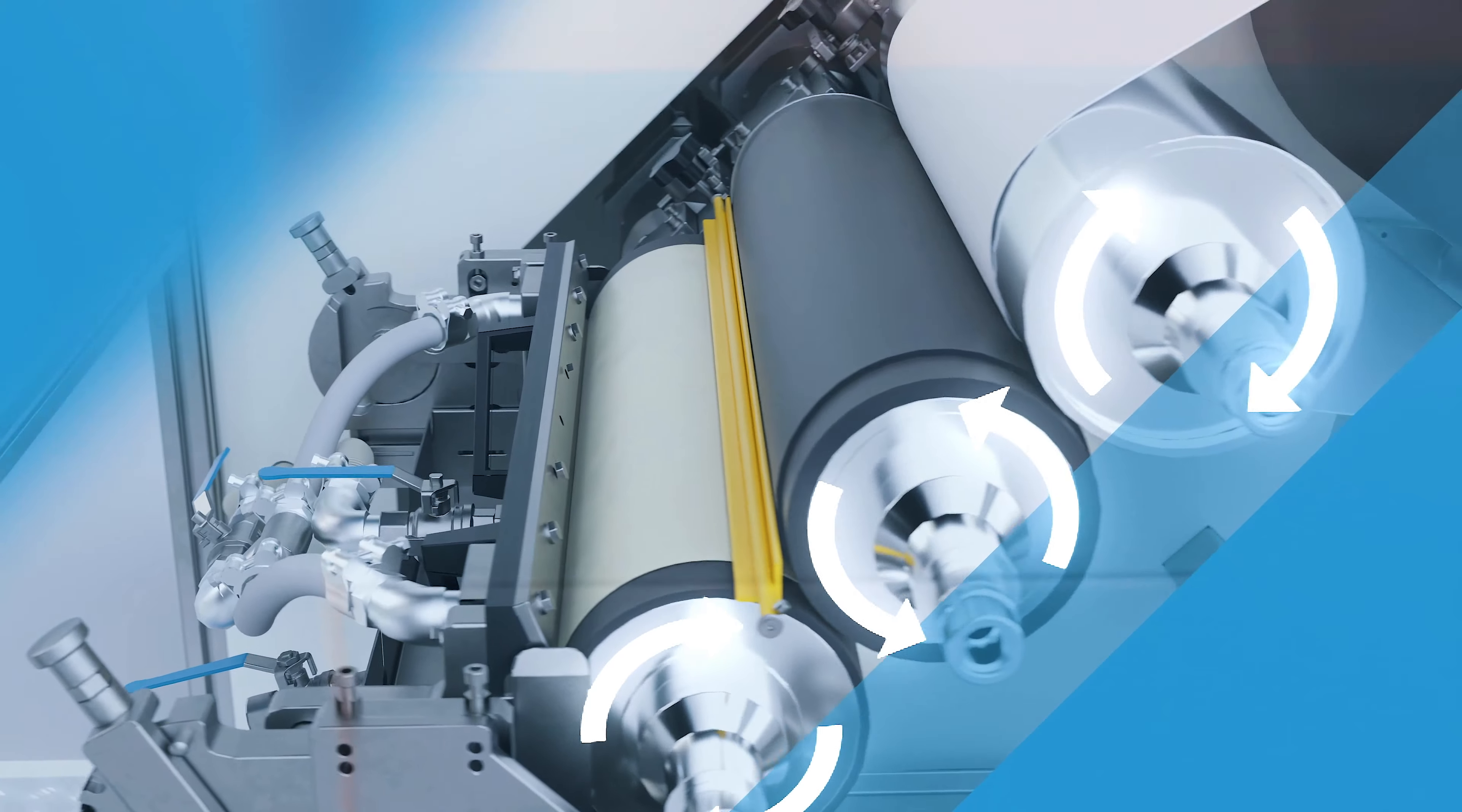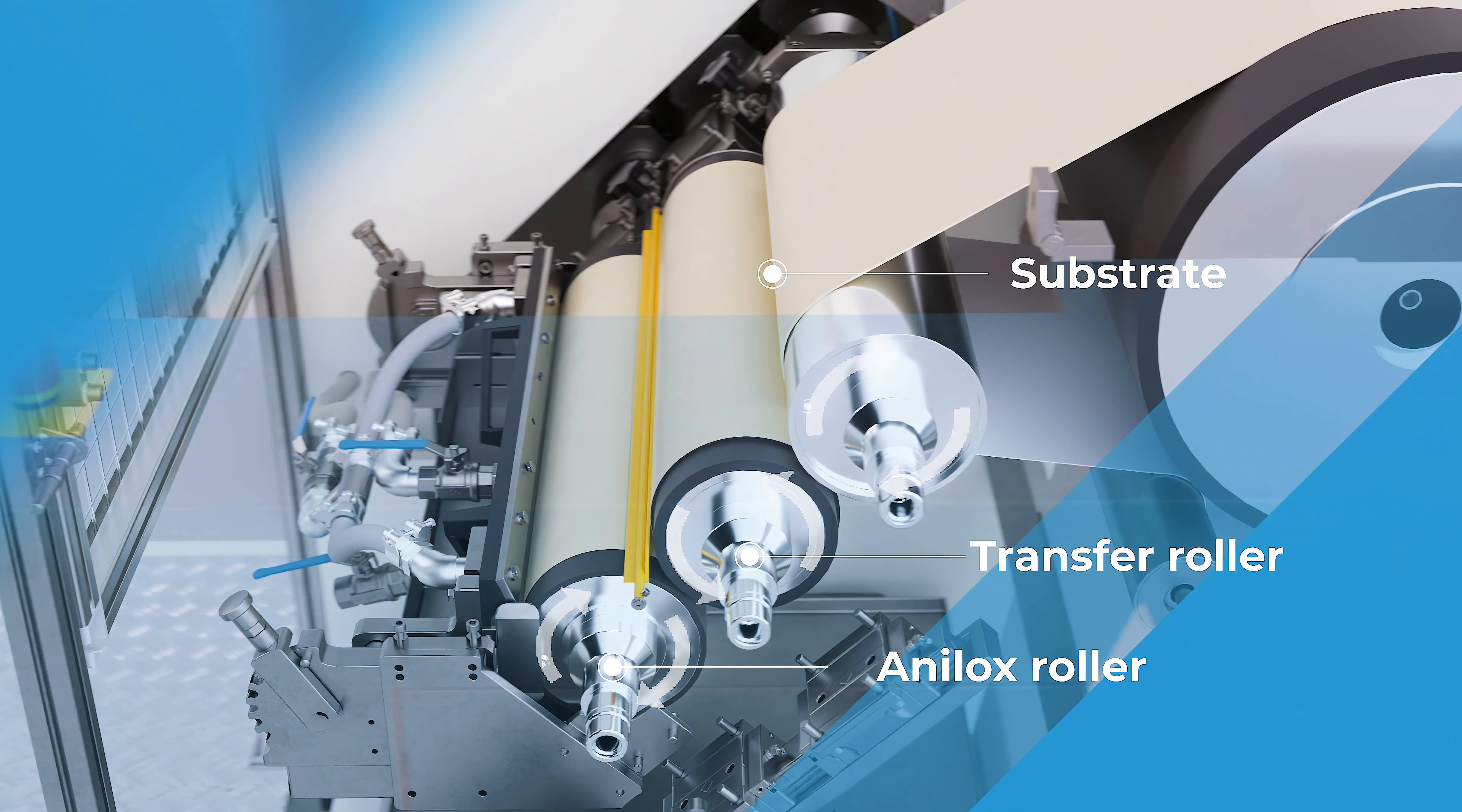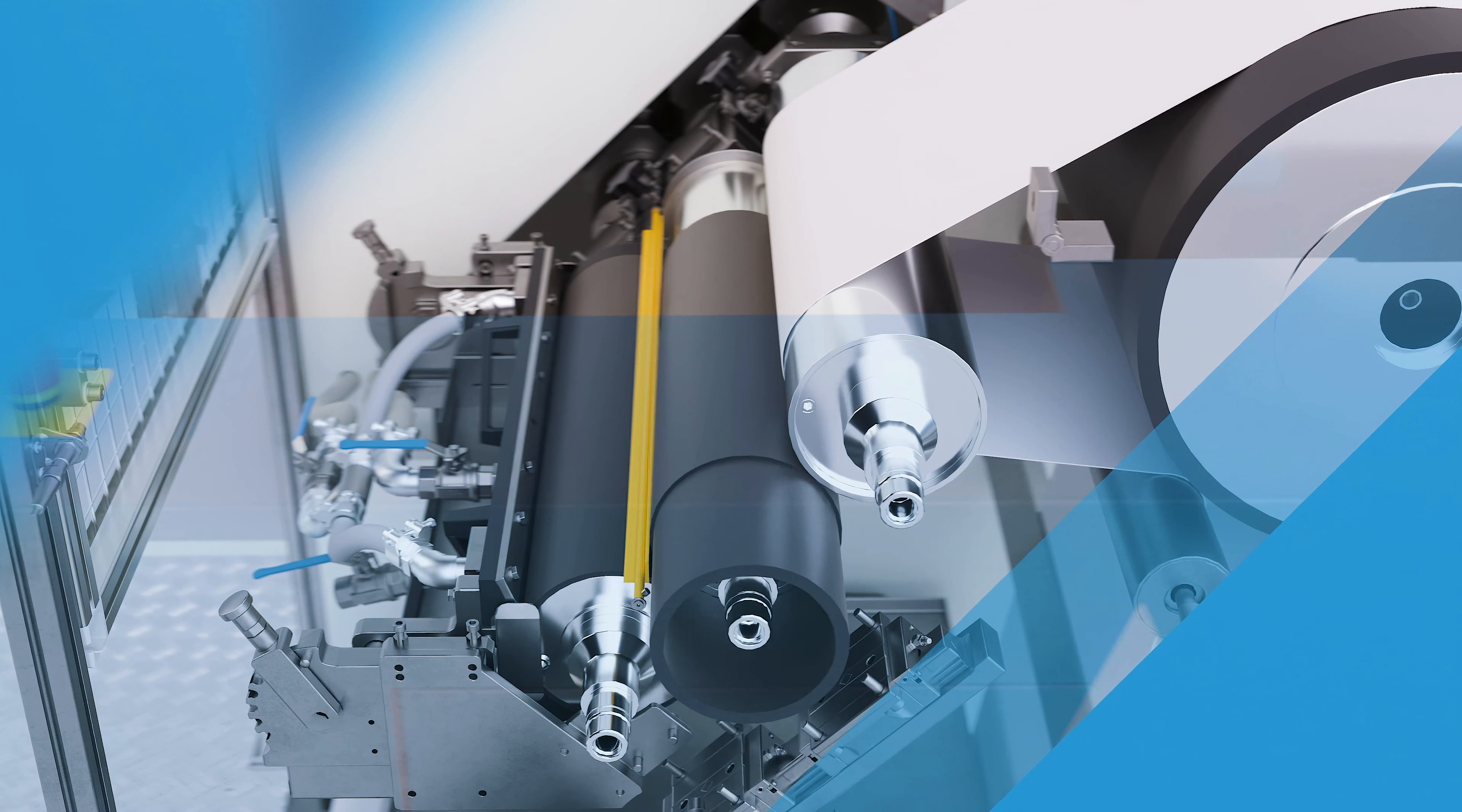The Anilox roller transfers the silicone to the transfer roller, which applies the silicone to the substrate. The sleeve of the transfer roller determines the coating pattern and is responsible for the footprint. The rubberized sleeve can be easily changed.